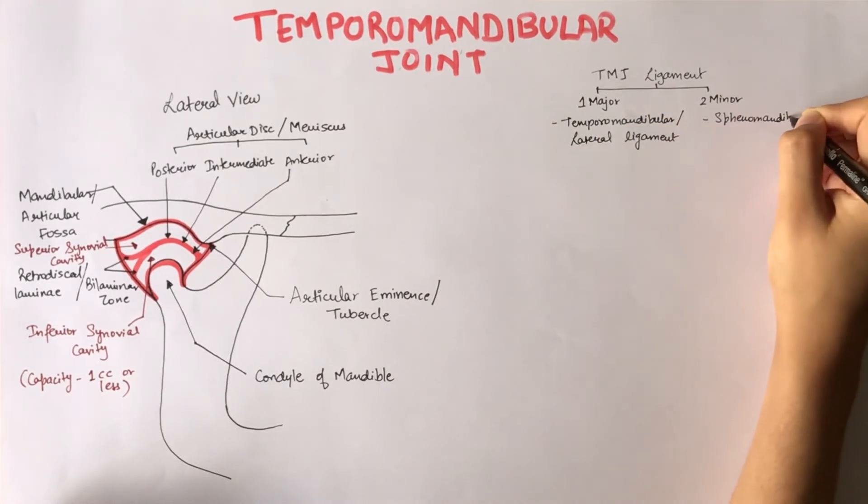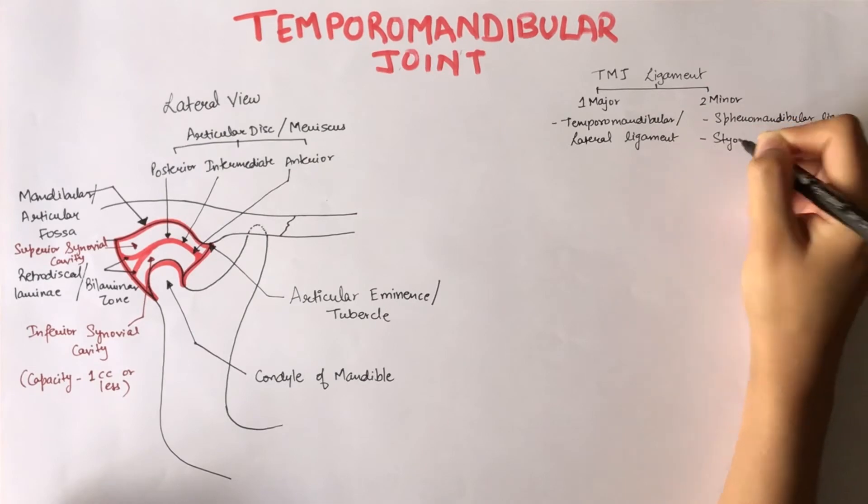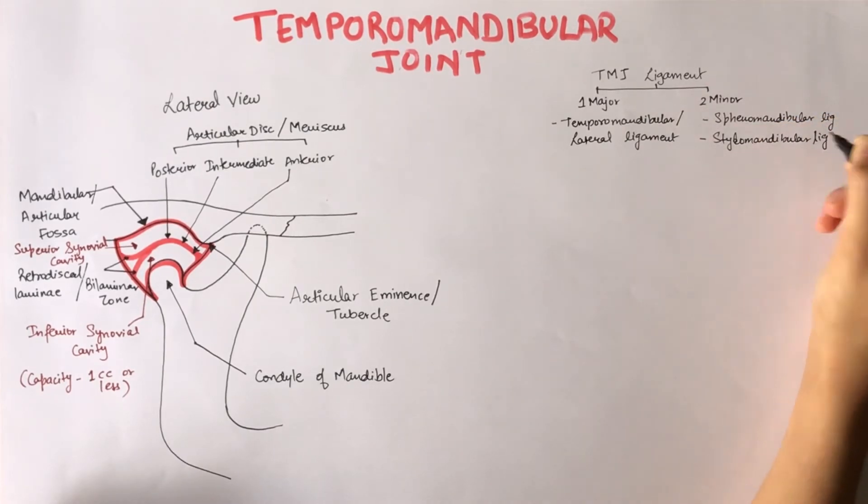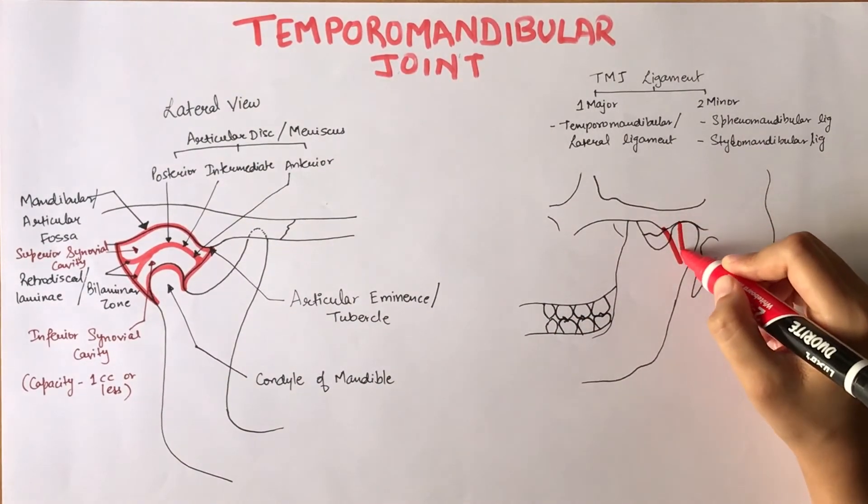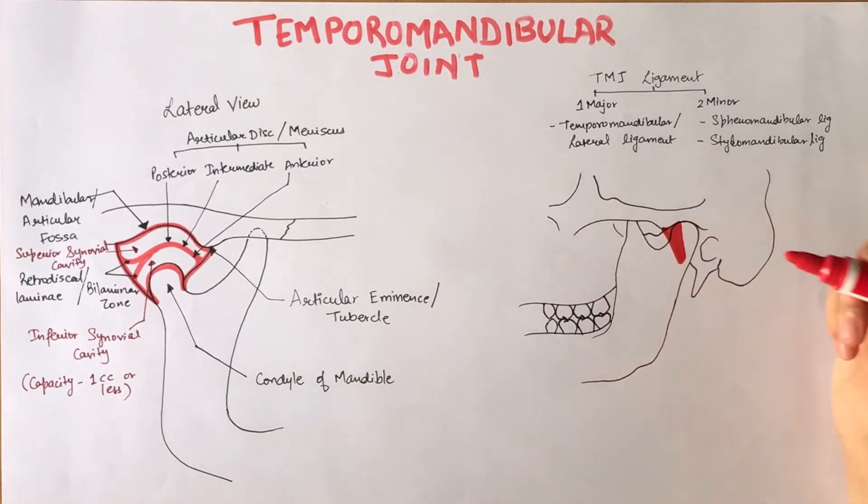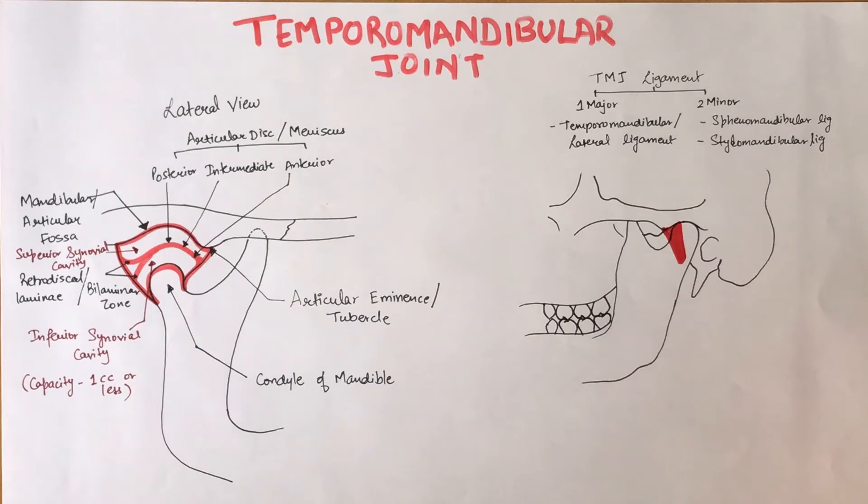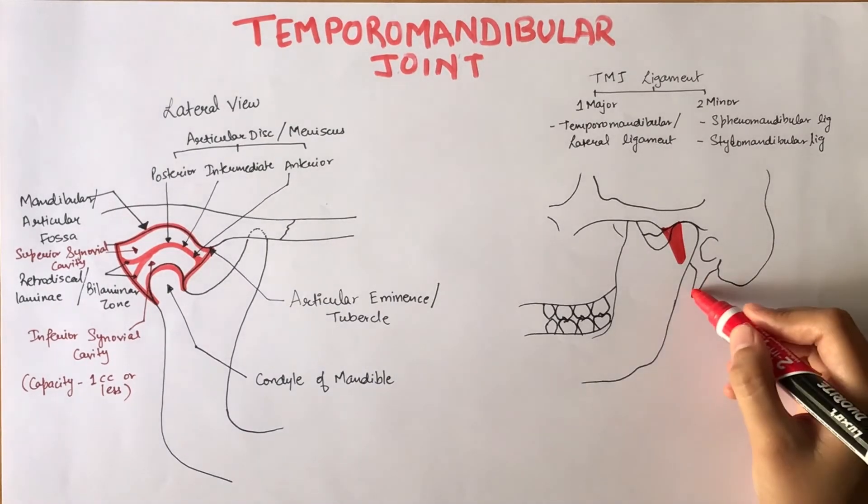The accessory ligaments, that are the minor ligaments, are not directly attached to any part of the joint. The base of the temporomandibular ligament is attached to the zygomatic process of the temporal bone and the articular tubercle, and at apex, it's fixed to the lateral side of the neck of the mandible.